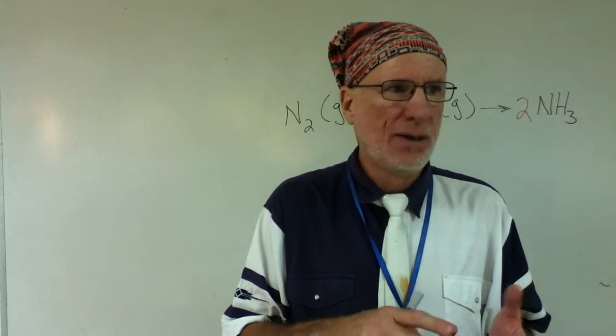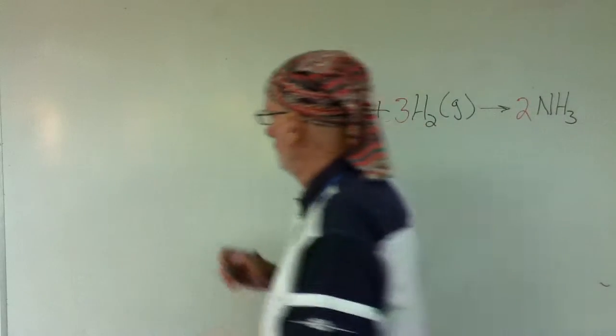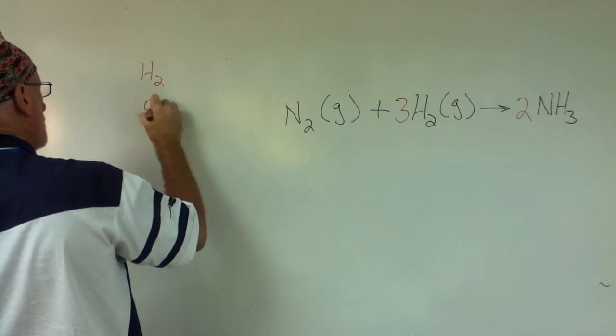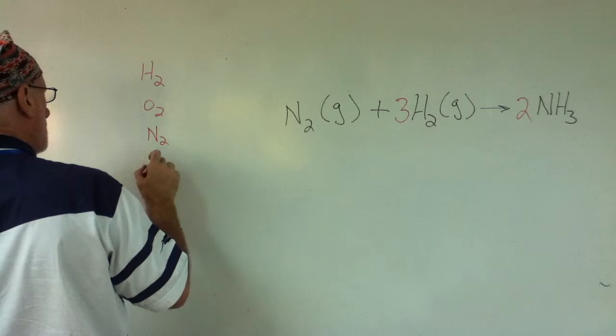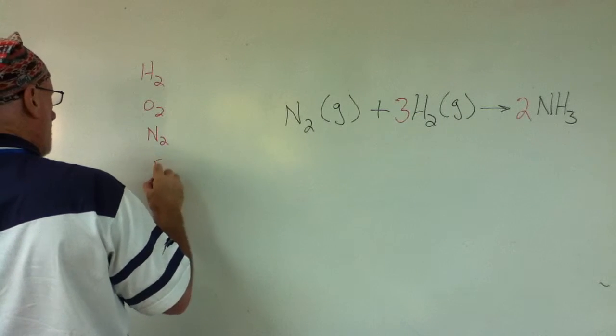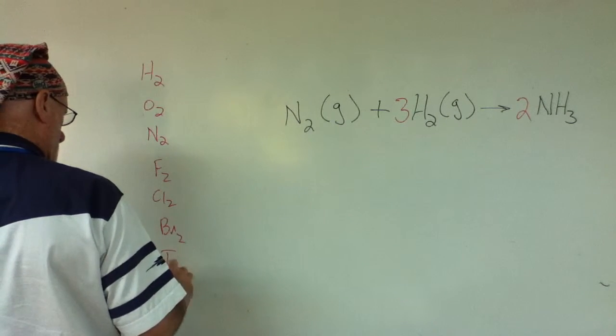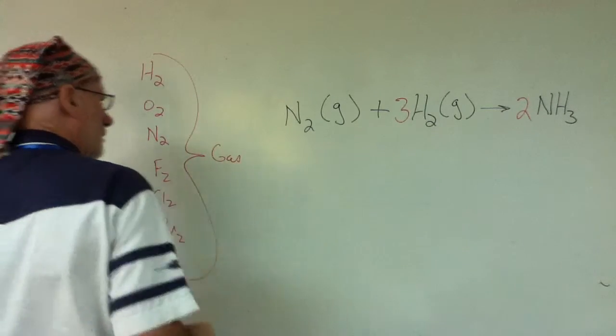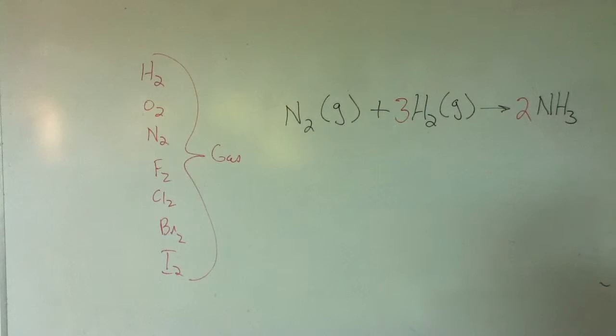If they're a gas, they're written diatomically. Understood? So what is it? H2, O2, N2, F2, Cl2, Br2, I2. Diatomic.